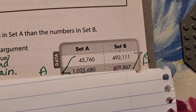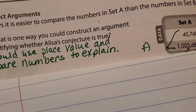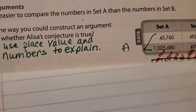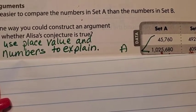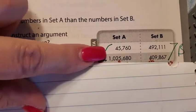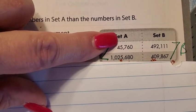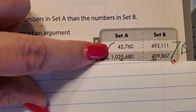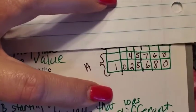Set B is 492,111, and the second number that we're comparing in set B is 409,867. Again, the question is, Alyssa says it's easier to compare the numbers in set A than the numbers in set B. Number one, the question is, what is one way you could construct an argument justifying whether Alyssa's conjecture is true? Well, what I would do, I would use a place value chart, and I could compare the numbers to explain. So right away, looking right here at set A to set B, my last number on the left is in the 10,000th place in 45,760. And my last, my number on the left in set A is 1,025,680. So I've already compared it right here.